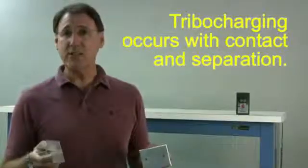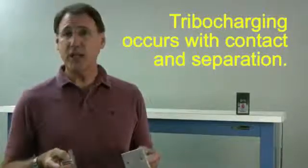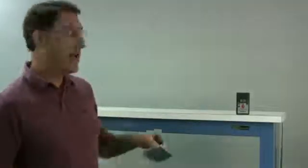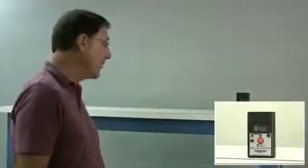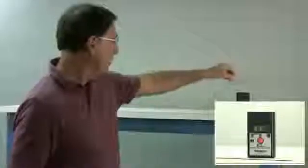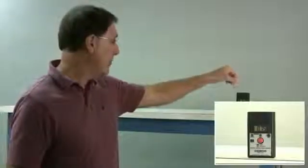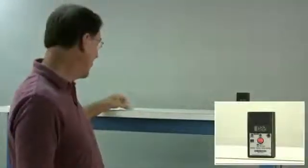Triboelectric charging is contact and separation that generates electrostatic charges, and we have an electrostatic field meter here. So here we have about 2,000 volts on the conductor, and over here we have 3 or 4,000 volts on the insulator.